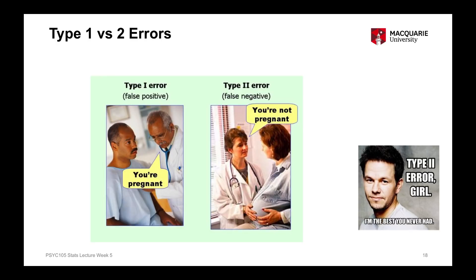We never actually know if there is a population effect — that's the whole point of collecting data from a sample to generalise back to the population. We never know what's going on in the population. We can get a better idea through the process of replicating research, doing multiple studies with different samples, and seeing if we have convergent evidence about a particular effect.